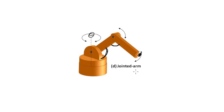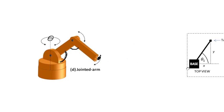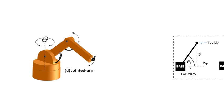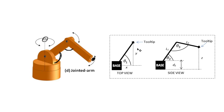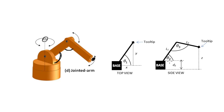Now if we think about this in a three-dimensional problem, life can become rather difficult. So it's a lot easier if we think about this problem in terms of two dimensions. If we have a look at bringing in two dimensions, we can look at the top view of our robot arm and a side view of our robot arm.